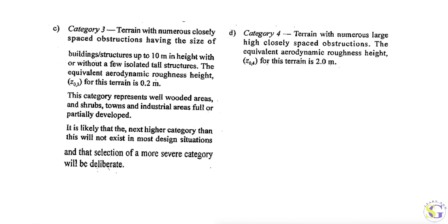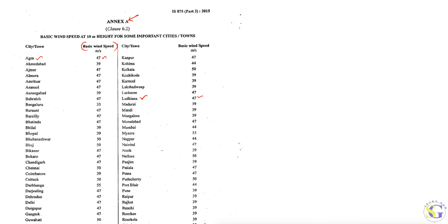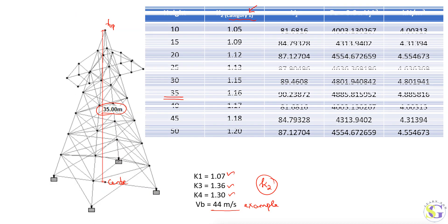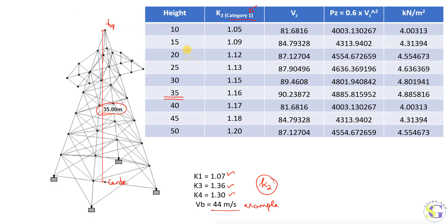After calculating by interpolation, the K2 values at each height are: at 10 meters it is 1.05, at 15 meters it is 1.09, at 20 meters it is 1.12, at 25 meters it is 1.13, at 30 meters it is 1.15, and at 35 meters it is 1.16.